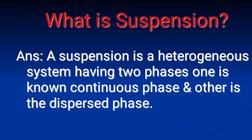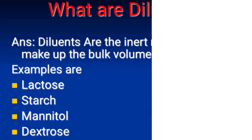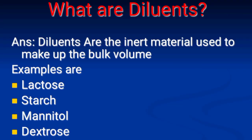Next: What is a suspension? Answer: A suspension is a heterogeneous system having two phases — one is known as the continuous phase and the other is the dispersed phase. Next: What are diluents? Answer: Diluents are inert materials used to make up the bulk volume. Examples are lactose, starch, mannitol, and dextrose.